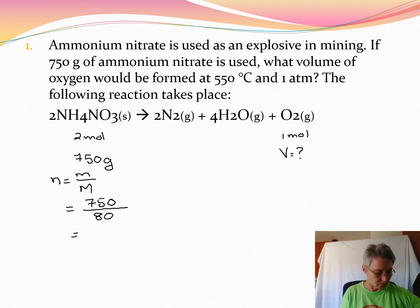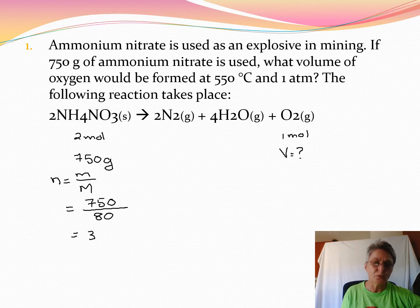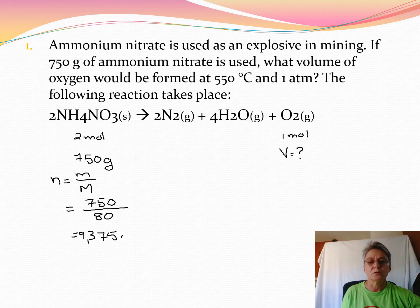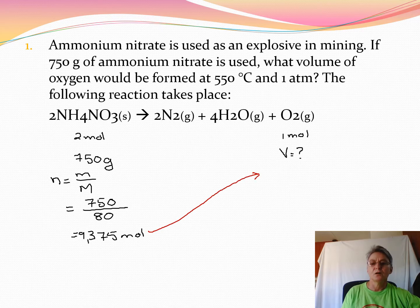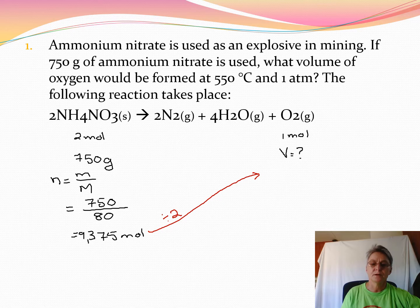We divide 750 by 80, so we get 9.375 moles of ammonium nitrate. To determine the moles of oxygen we will need to divide this by 2 and that will give us the moles of oxygen because the ratio is 2 moles to 1 mole.